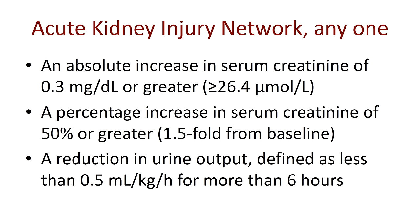The third criterion is a reduction in urine output defined as less than 0.5 mls per kilogram per hour for more than a six-hour period. We should ideally observe urine volumes every hour, and if producing less than this obligatory 0.5 mls/kg/hour (based on ideal body weight) for six hours, that is also diagnostic of acute kidney injury. Any one of those three criteria is sufficient for diagnosis.